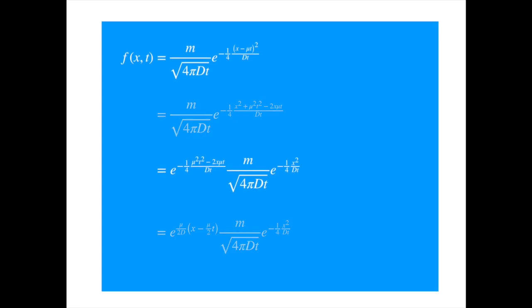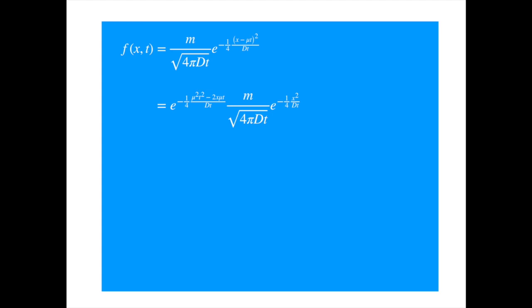To see the informal connection with the Girsanov theorem, let's rearrange the solution a bit. First, let's assume that D is equal to 1 divided by 2. D will depend on the nature of the physical system, but we are interested in the maths only now. So we can assign it any positive value. 1 divided by 2 simplifies it, so we go with 1 divided by 2.